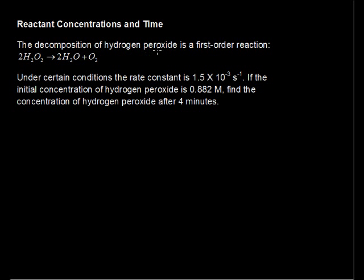Now we're given that the decomposition of hydrogen peroxide is a first-order reaction, and that means that we can use a specific formula, and I'll give that to you in just a minute. We have 2H2O2, that's the hydrogen peroxide, yields 2H2O plus O2.